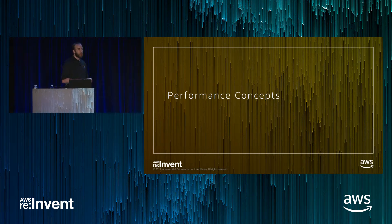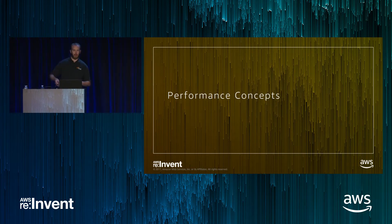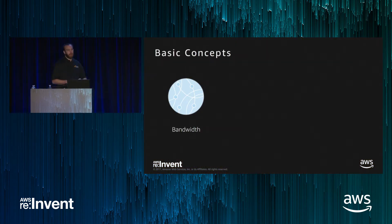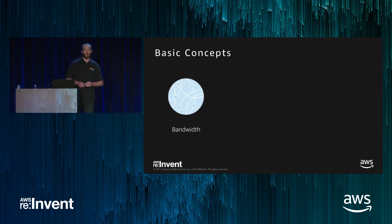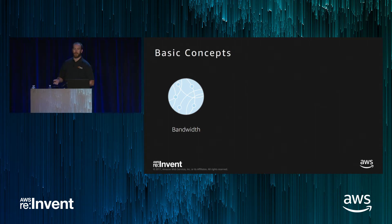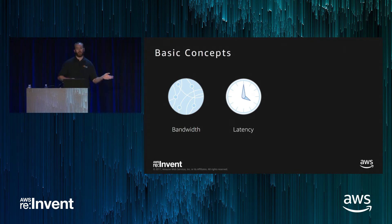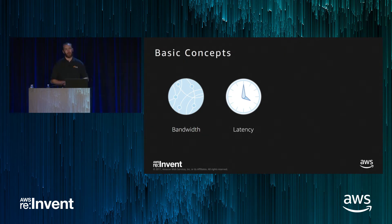Let's start with concepts — probably the most important part. These are universal concepts; TCP and IPv4 even go to space. First is bandwidth, which many people focus on — a 1 Gbps Direct Connect or 10 Gbps capable instance are examples. Then there's latency — how long it takes a packet to travel from one point to another. We usually measure round-trip time, or RTT.